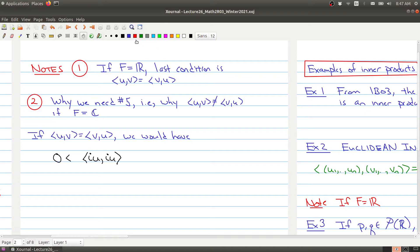So we can take any non-zero vector. For any non-zero vector, we have that iu, iu, where i is a scalar. We know that this is greater than zero. This is by number two and number one.